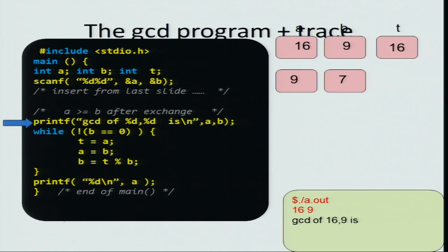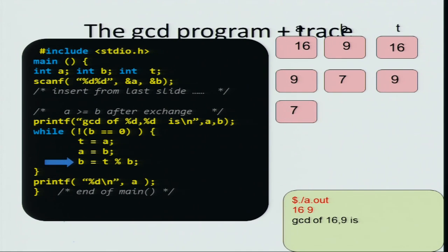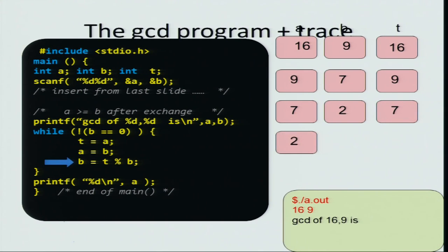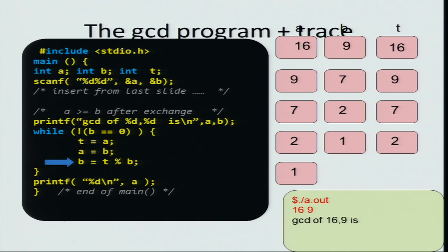Again b is not 0, so we enter the loop again: t = 7, a = 2, b = 1. Again we enter the loop since b is not 0: t = 2, a = 1, and b = 0. At this point we exit the loop. The value of a that we ended with is the GCD of the original numbers. Since 16 and 9 are relatively prime, their GCD is 1.